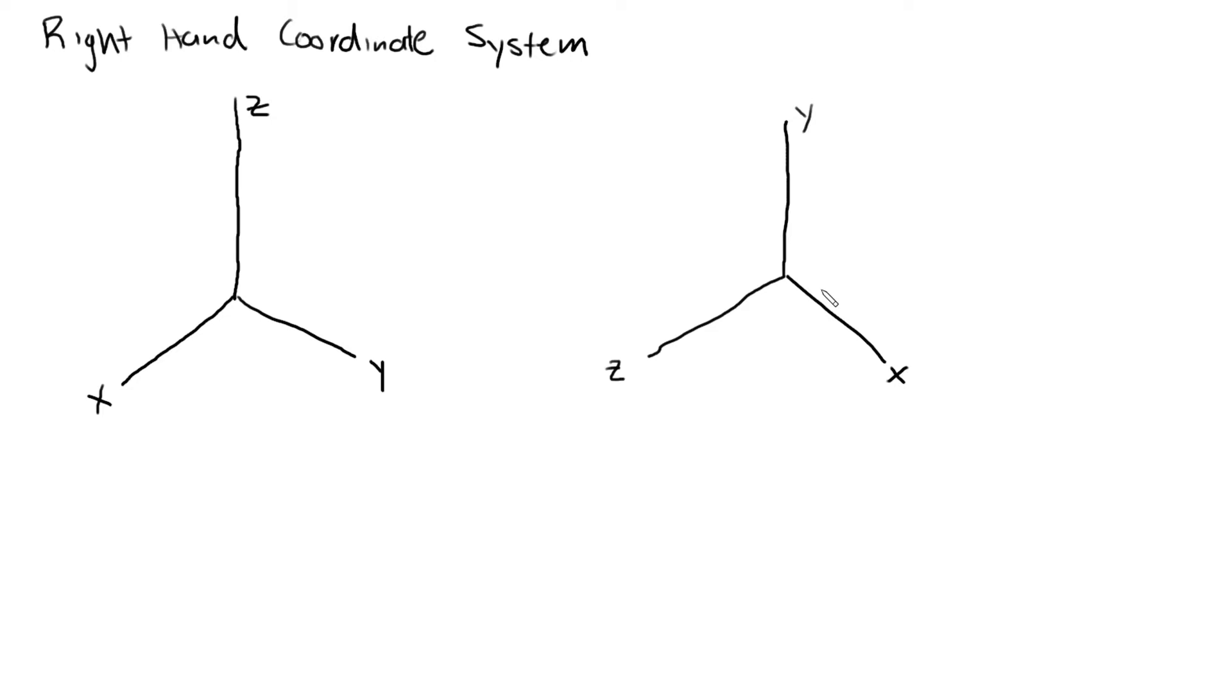Now you may be asking, why is this valid? The reason I know this, to generalize this concept, is that i cross j will always give you positive k.